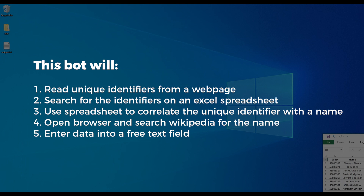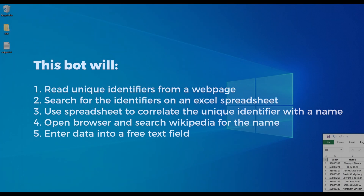Then we'll open a web browser, search for that name on Wikipedia, and take note of whether that person has a page and if so anything important about them. This data will all be entered into a free text field on the unique identifier's object within a work system and saved.